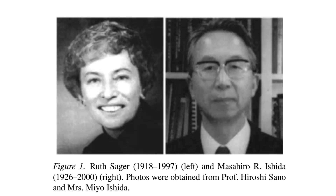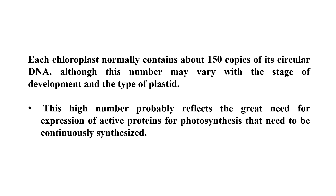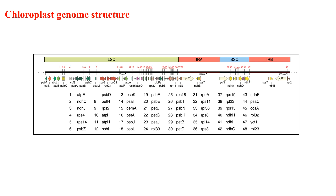In many scientific articles we see that there are a lot of copies of DNA inside those chloroplasts. In general, each chloroplast normally contains about 150 copies of its circular DNA, although this number may vary with the stage of development and the type of plastid. Why this high copy number? Briefly, this high number probably reflects the great need for expression of active proteins for photosynthesis, which need to be continuously synthesized.